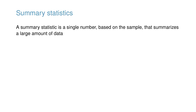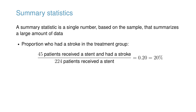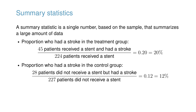We can compute summary statistics from the table. A summary statistic is a single number, based on the sample, that summarizes a large amount of data. For instance, the primary results of the study after one year could be described by two summary statistics: the proportions of people who had a stroke in the treatment and control groups. The proportion who had a stroke in the treatment or stent group was 45/224, or 20%. The proportion who had a stroke in the control group was 28/227, or 12%.